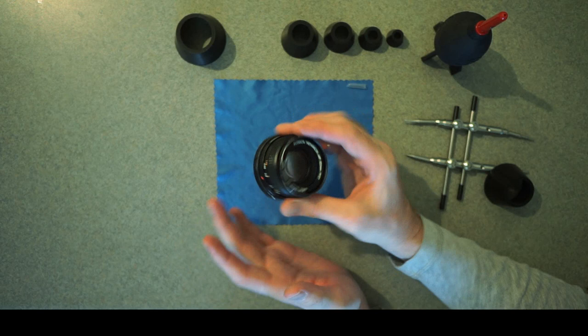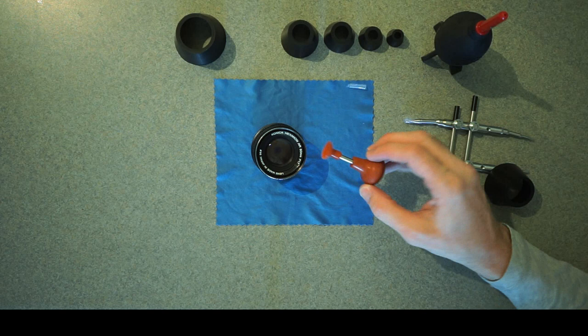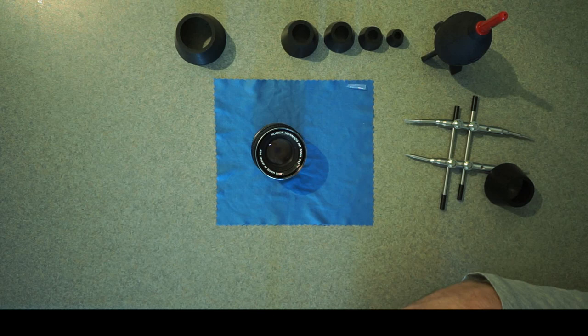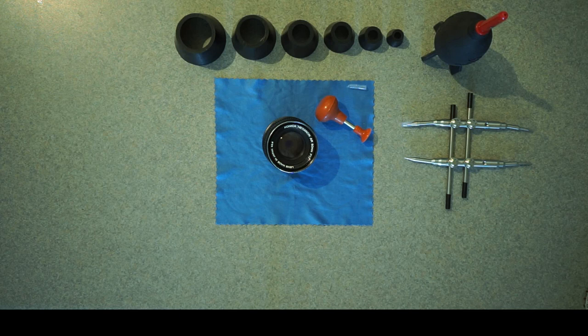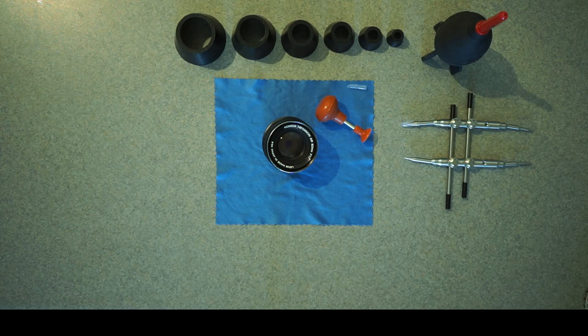That's how you clean up a Konica 50mm f1.7 Hexanon AR vintage lens. Made in Japan. Probably somewhere around 1978 or so this would have been made. Anyway, I hope you enjoyed that. Hopefully that was helpful, informative. And if so, please give me a like. Click subscribe and check back often. There'll be more content on the way. Take care. Bye.